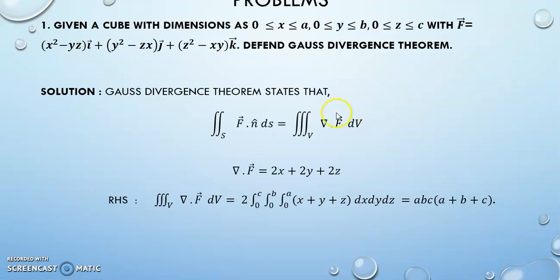Let's start with the problems. First, let's start with defending a Gauss Divergence Theorem. Defending in the sense we have to prove the Gauss Divergence Theorem, that we have to prove that left-hand side is equal to the right-hand side and the surface integral is equal to the volume integral.